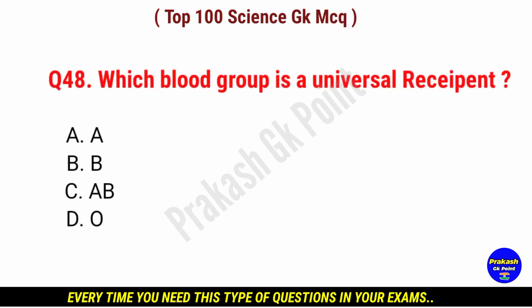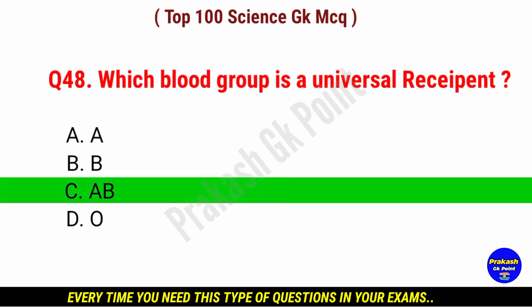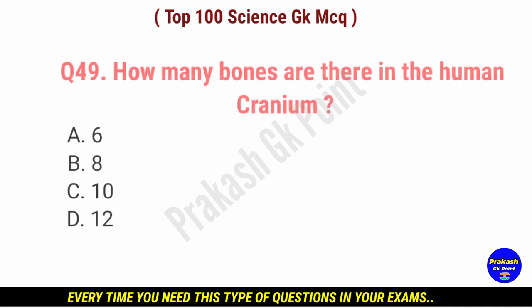Which blood group is universal recipient? Answer: option C, AB blood group.